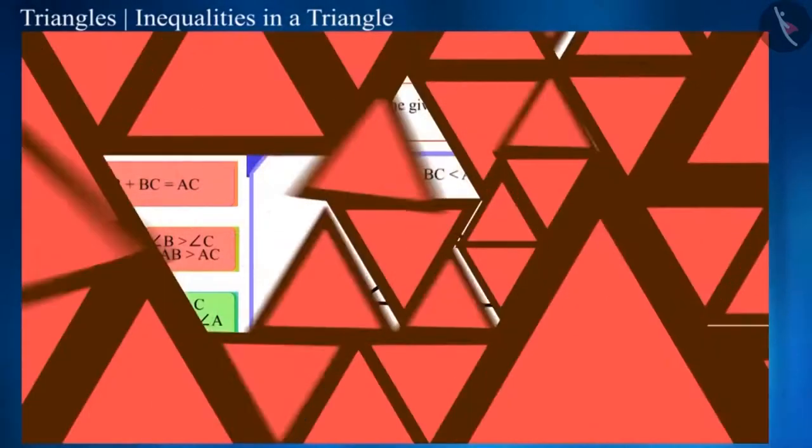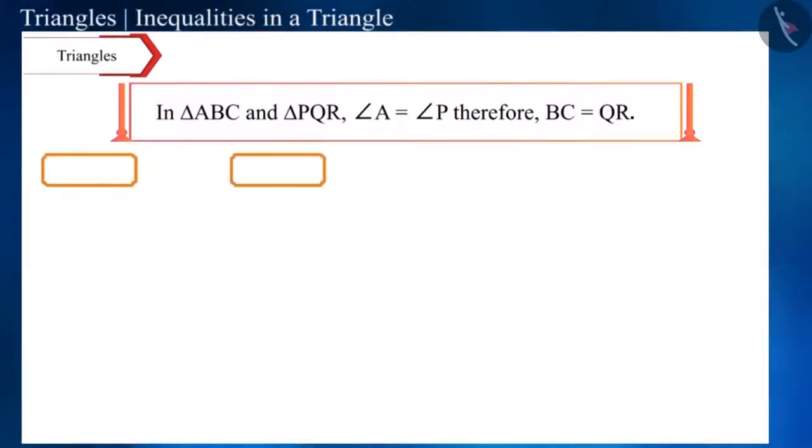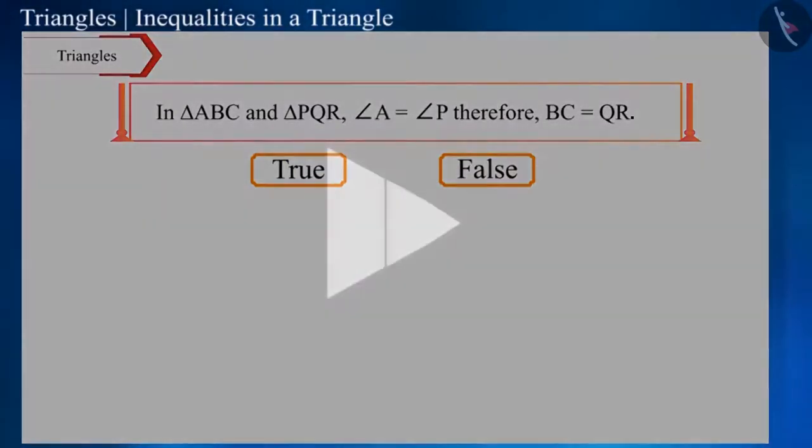Let's take the next question. In triangle ABC and triangle PQR, angle A is equal to angle P. So, the opposite side, side BC of angle A will be equal to the opposite side, side QR of angle P. Is the statement true? You can also pause the video to answer this question.